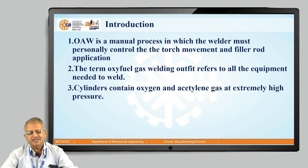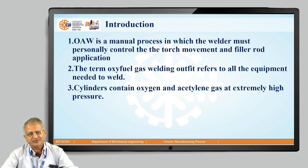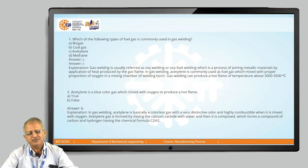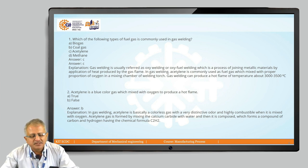Oxy-acetylene welding process is a manual welding process. The person operating it controls the torch movement and filler rod movement. All the equipment required includes the oxygen cylinder, gas cylinder, the hoses, the regulators, the torch, etc. These are the parts of the oxy-acetylene welding process.